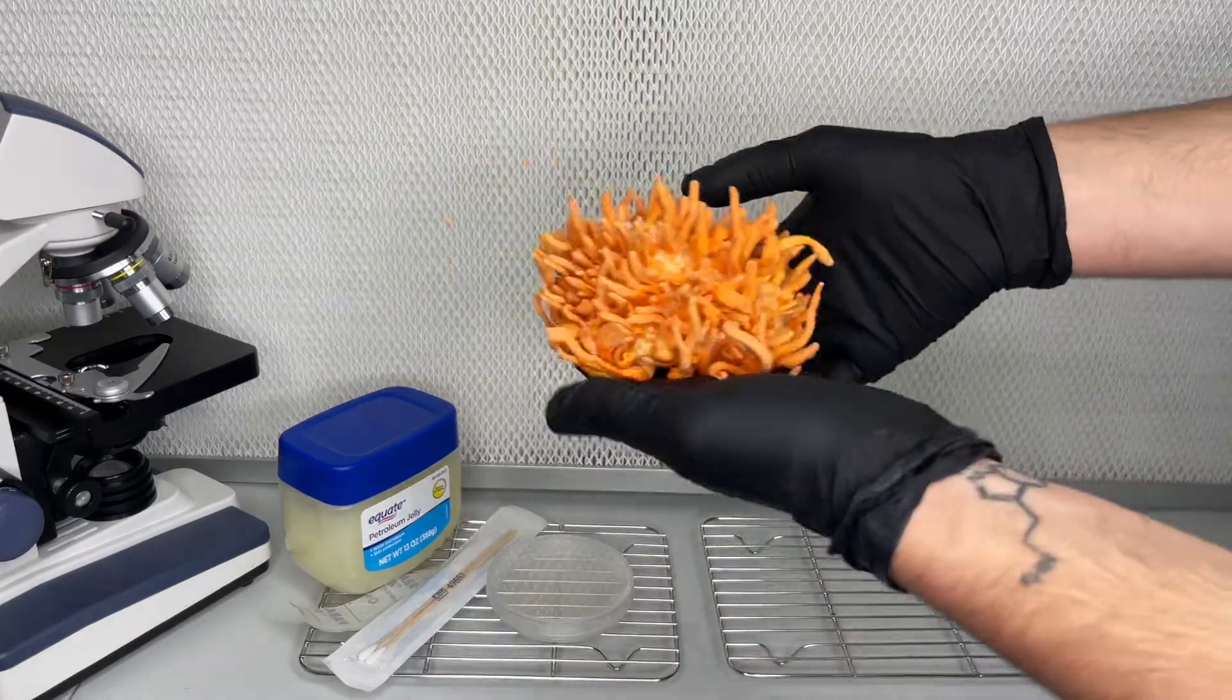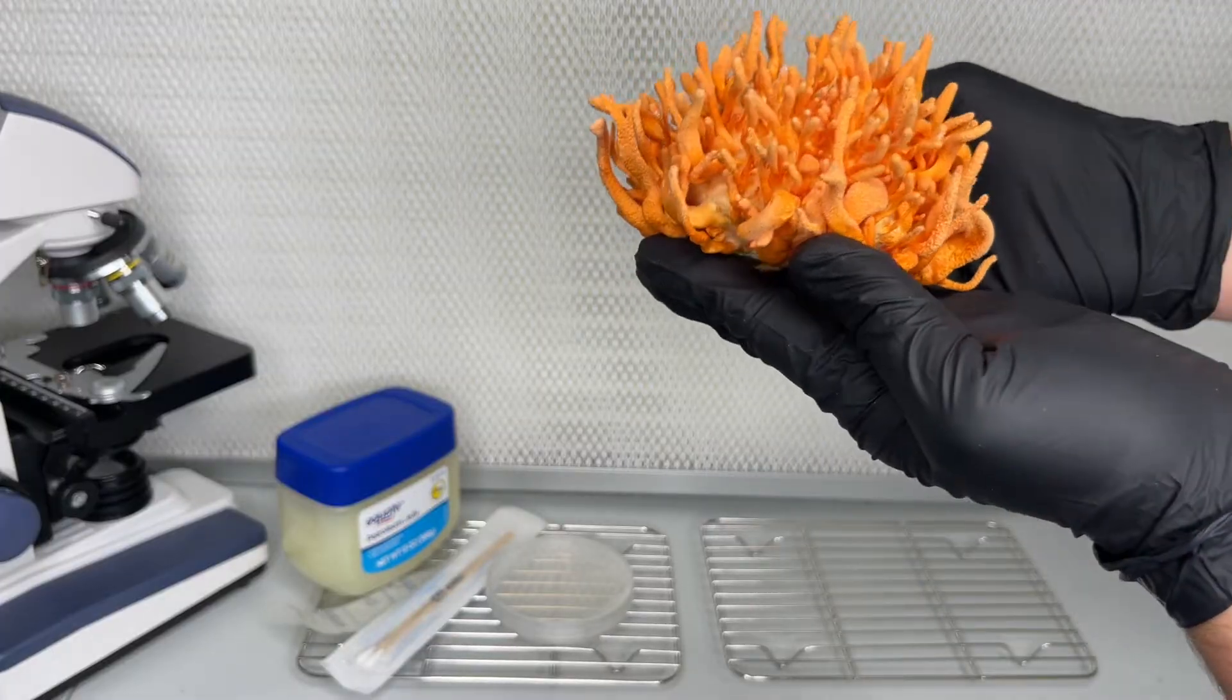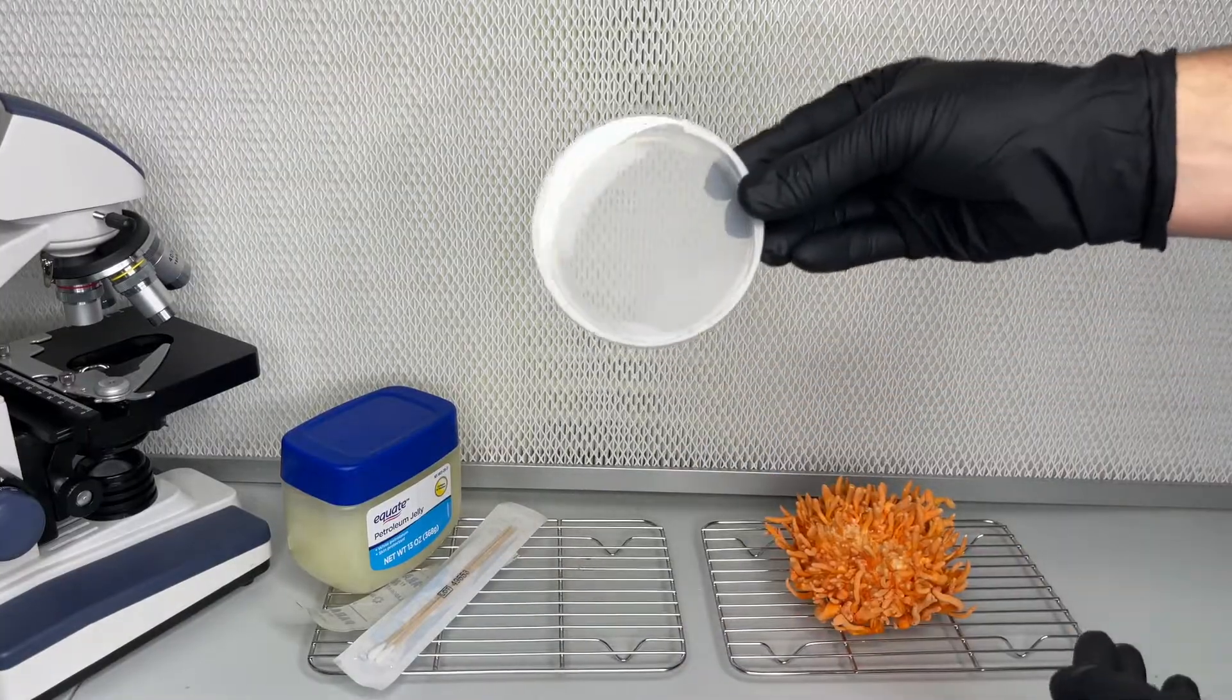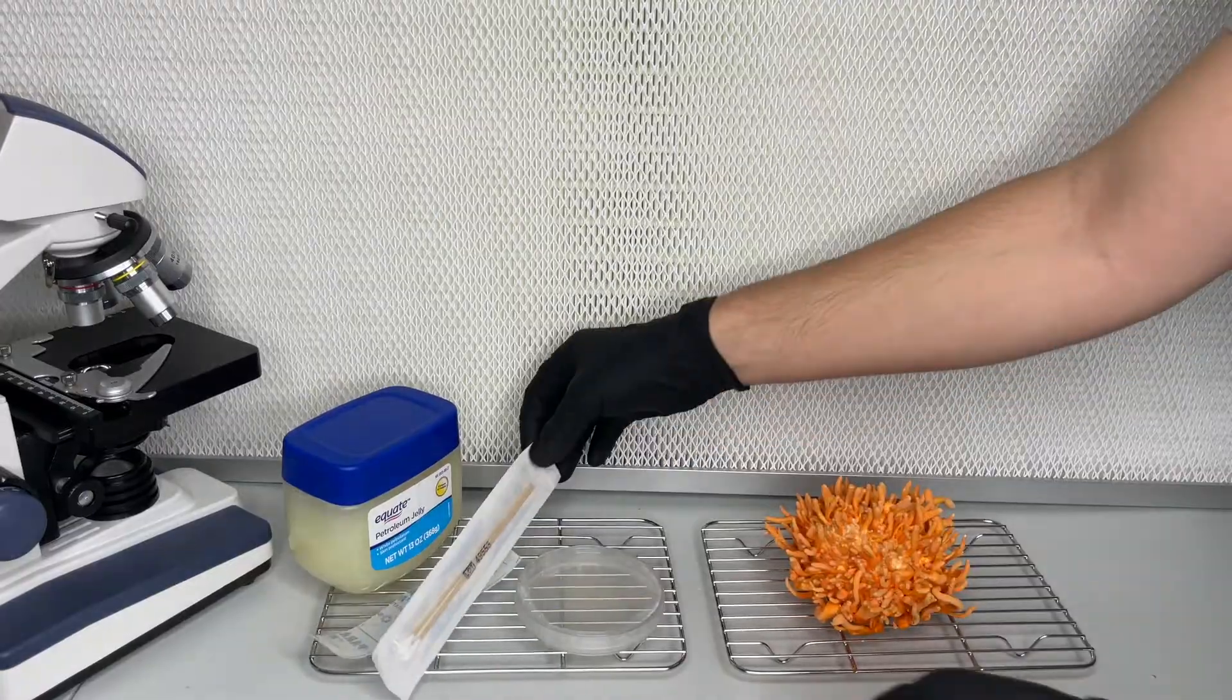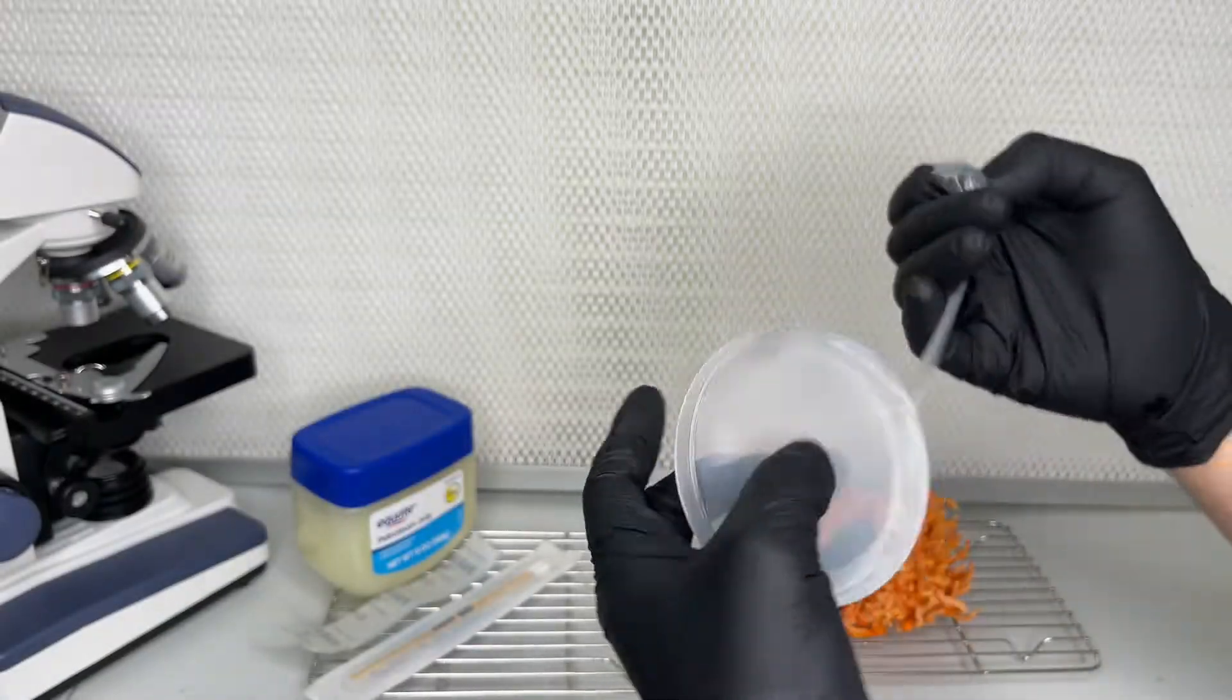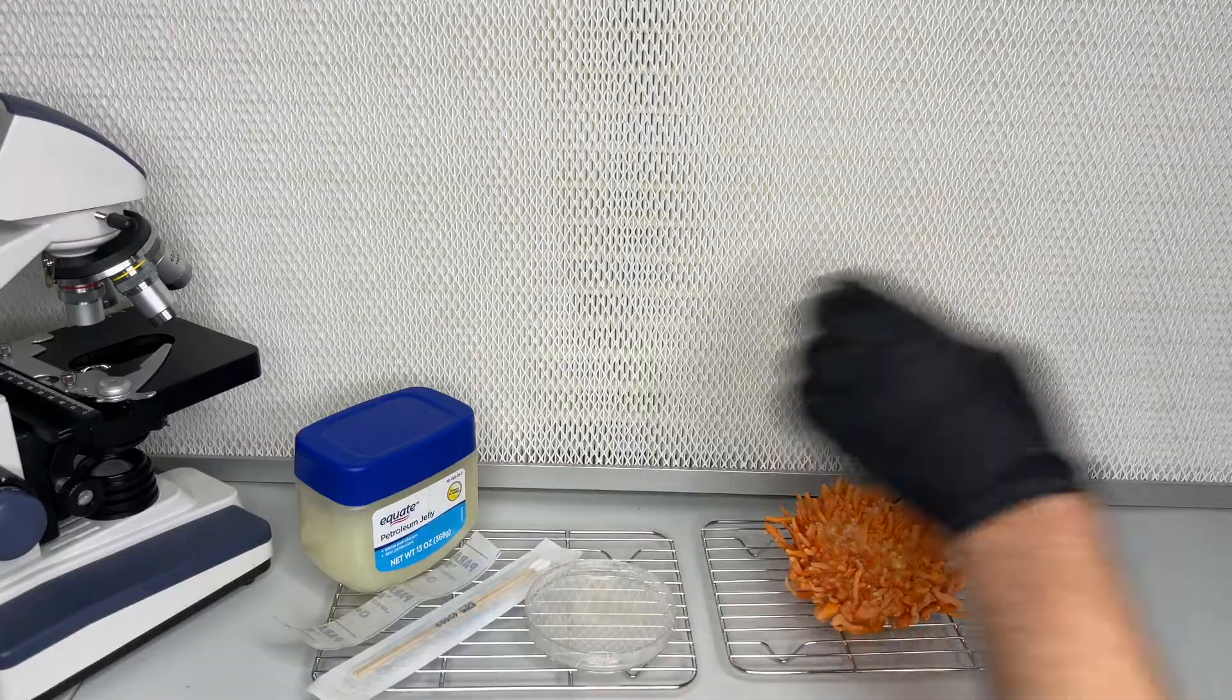Cordyceps militaris is more prone to genetic degradation or senescence compared to other mushrooms like oysters. When the mycelium is exposed to high temperatures, over-expansion, or old age, it will start producing deformities and mutations. In this video, I'm going to be collecting multi-ascospore isolates to start the life cycle over.